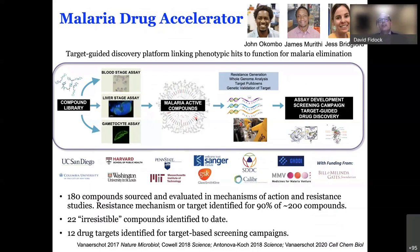We also work closely with Elizabeth Winzeler and colleagues at Harvard and Washington University to define the druggable genome — identifying pathways we can attack pharmacologically to develop new medicines not susceptible to existing resistance mechanisms. The Bill & Melinda Gates Foundation and MMV are major supporters of this work. The goal is not only to understand resistance but to leverage that knowledge to identify new chemotypes with new modes of action that can hopefully make it into the clinic.